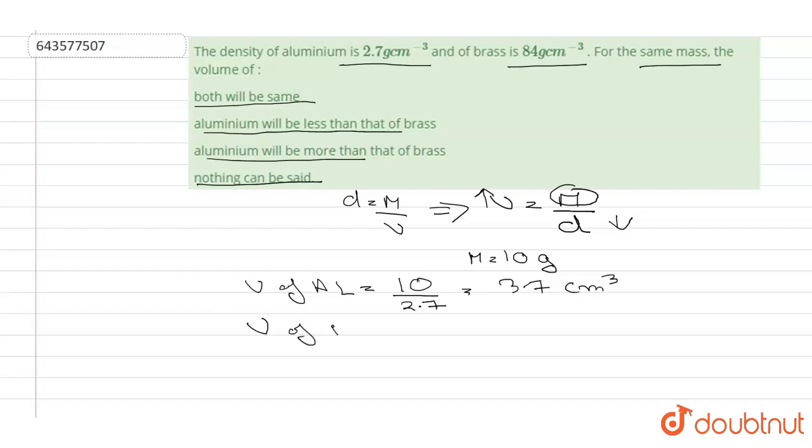And volume of brass is equal to 10 upon 84, which equals 0.11 centimeter cube. So as we can see, volume of aluminium is very much higher than that of brass.